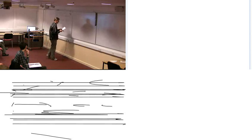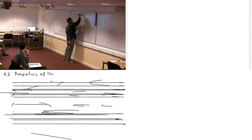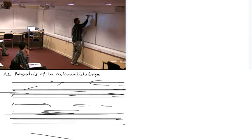We have also seen a first example of a field theory, which was classical electrodynamics. Now let us look at a more general field theory and examine a few properties of the Lagrange equations and the action. Let's go to section 1.5, where we look at properties of the action and Euler-Lagrange equations.